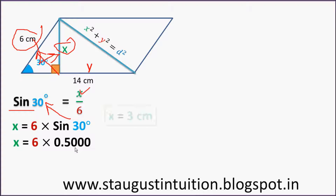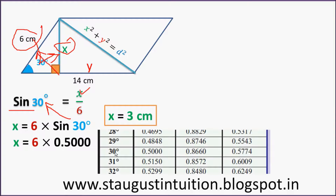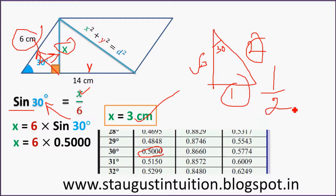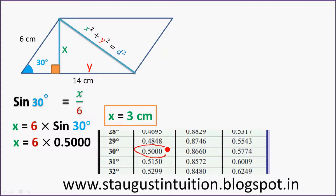Sin 30 is equal to 0.500, or from the table, sin 30 = 1/2. So x = (1/2) × 6 = 3. Therefore x is equal to 3 cm.